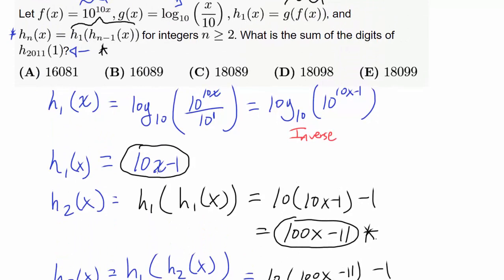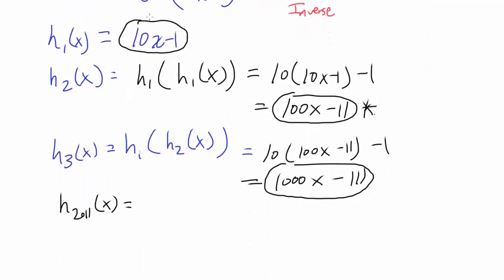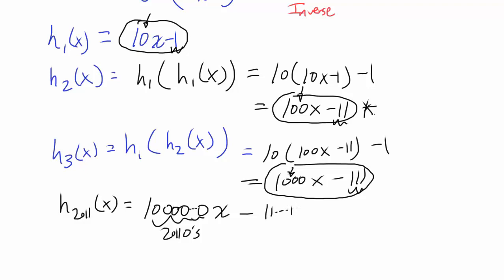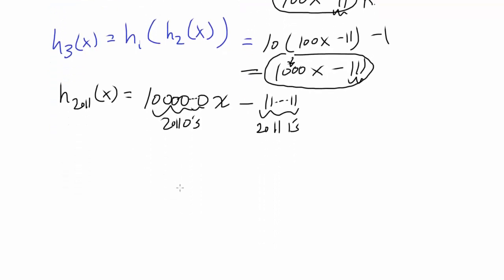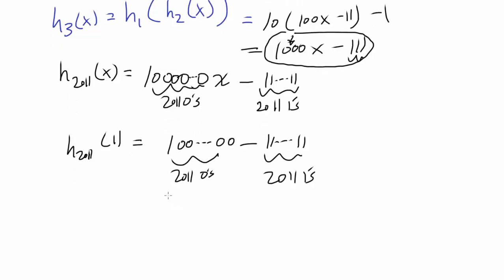We wish to find h₂₀₁₁(1). The coefficient of x follows powers of 10, so h₂₀₁₁(x) = 10^2011 · x minus a number with 2011 ones (i.e., 111...1 with 2011 digits). Plugging in x = 1, we get 10^2011 minus 111...1 (2011 ones). That is, a 1 followed by 2011 zeros, minus 2011 ones.